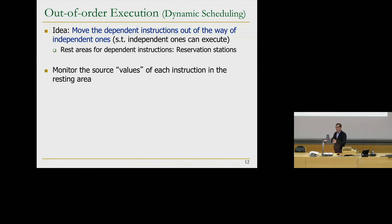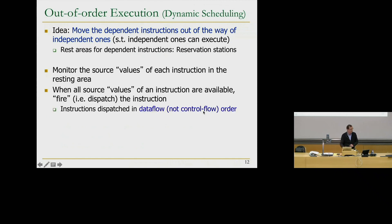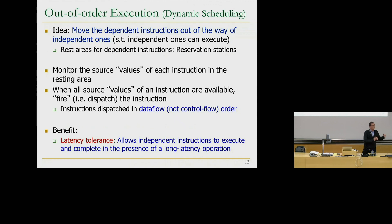You can think of reservation stations as rest areas for cars on a highway: if you're dependent on something, you go off the highway so other cars can go. It would be terrible if every car that's dependent on something had to wait on the highway — the same is true for the pipeline. While instructions are sitting in these reservation stations, we monitor their source values. If both source values are ready, the instruction can fire. This is out-of-order dispatch: you dispatch an instruction when its source values are ready — that's exactly the soul of data flow.